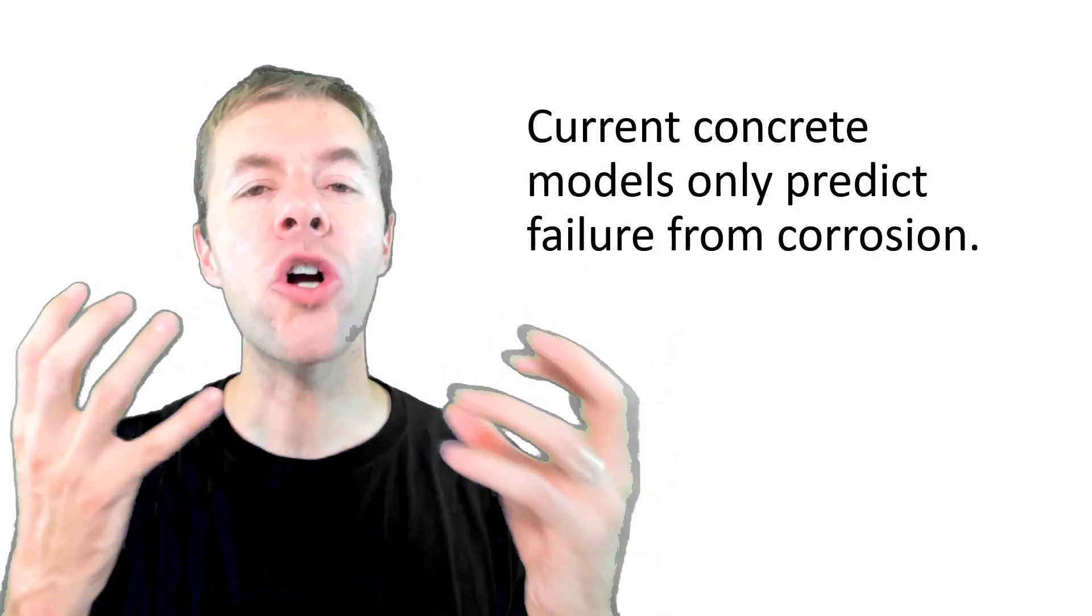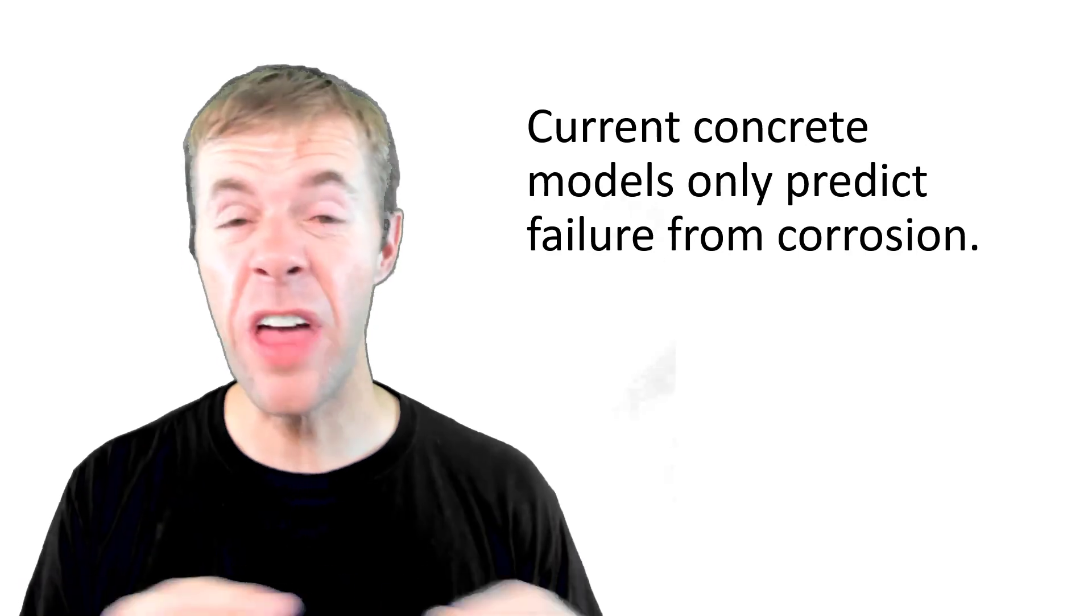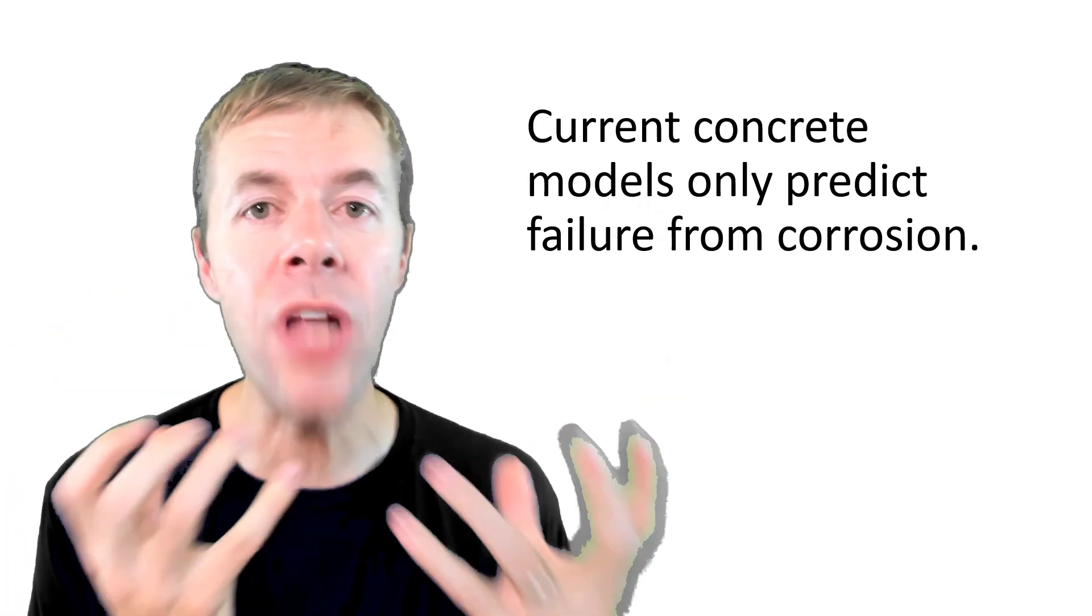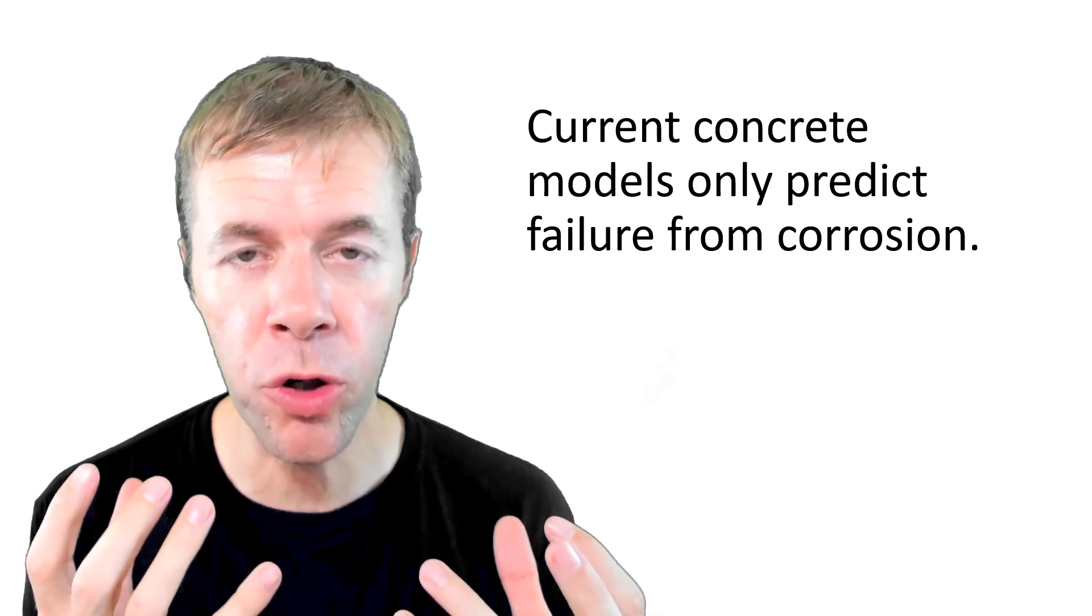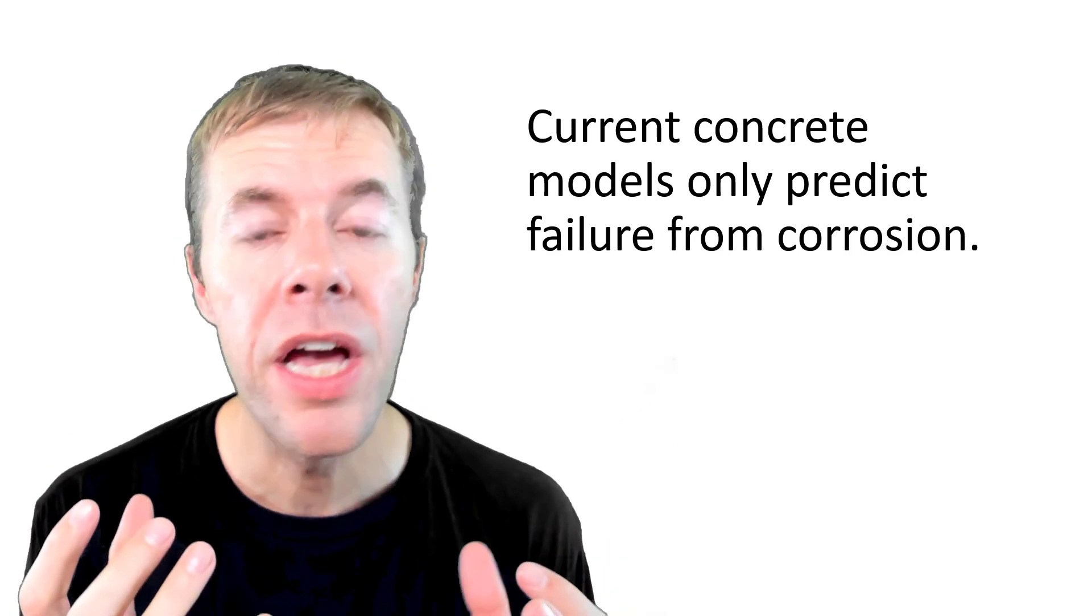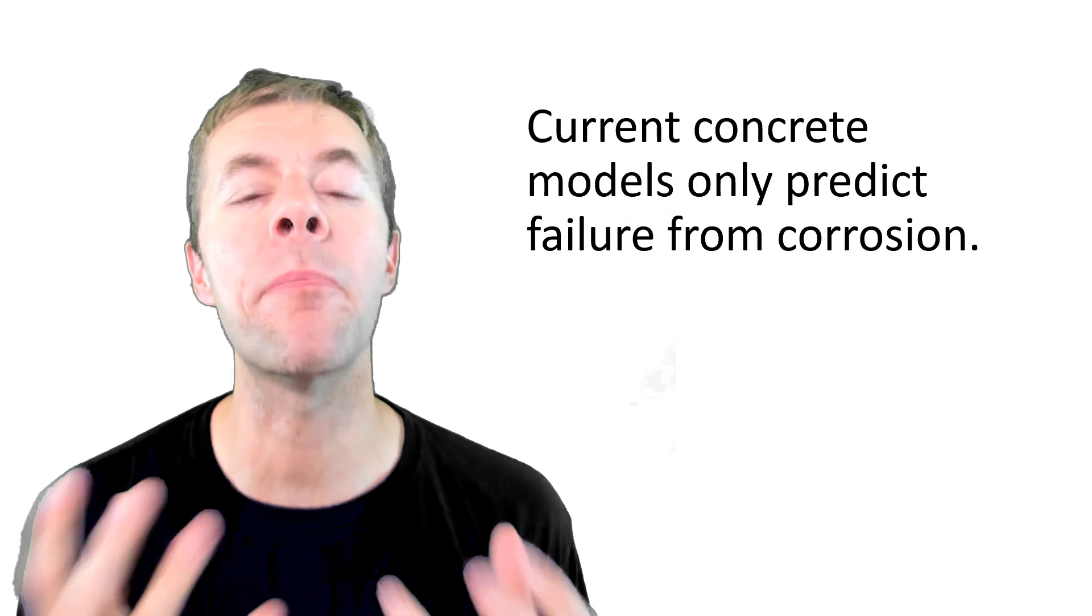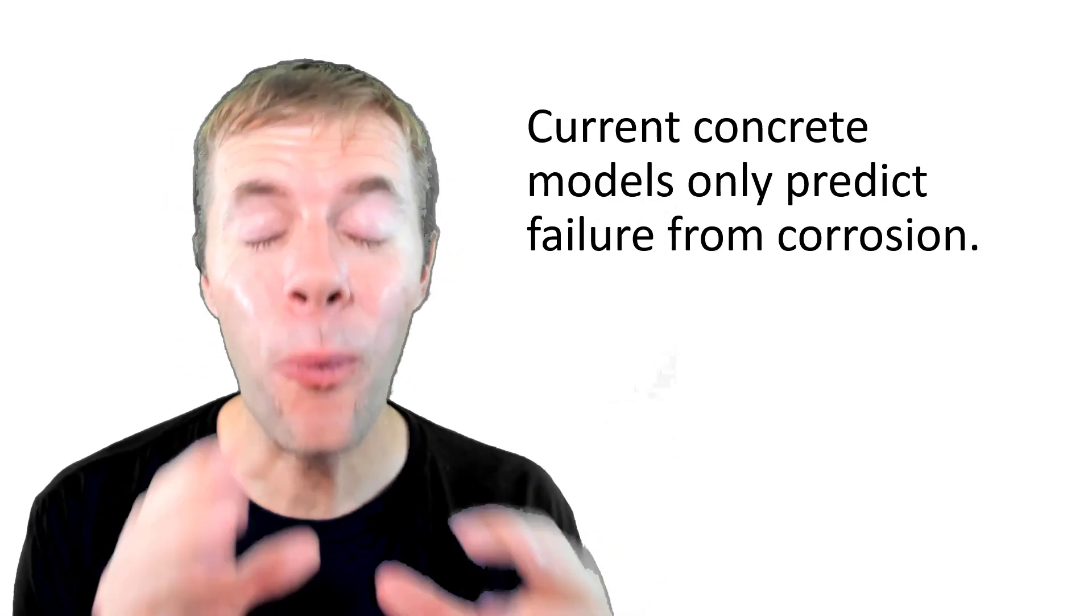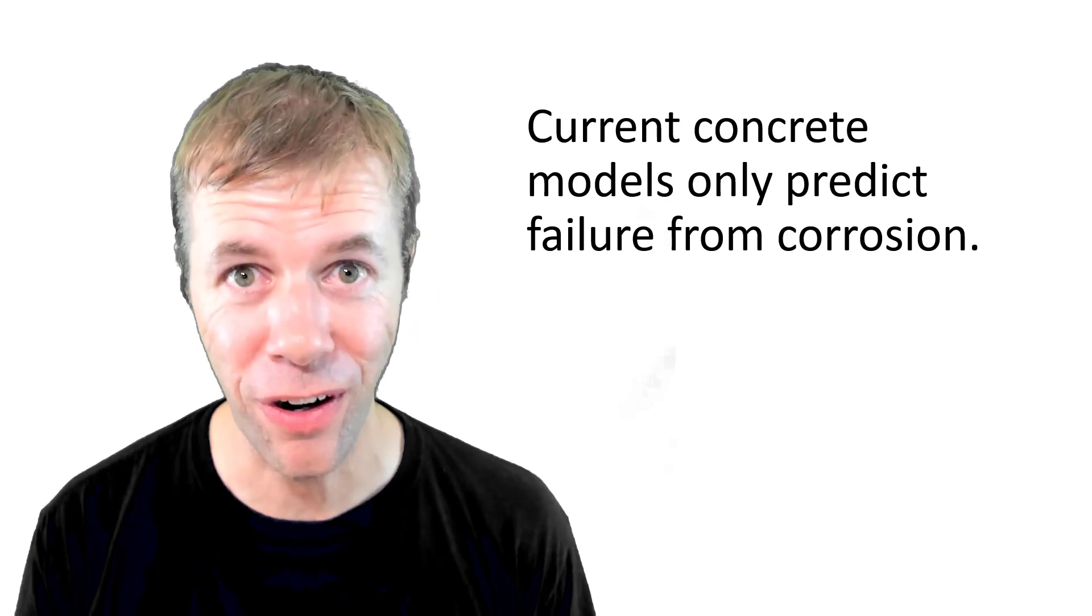But if we can find out how something's going to die, then we've got a better chance of figuring out how long it's going to live. Our current models that I'm going to talk about and that are used in practice only predict failure from corrosion. That does not mean that all structures fail from corrosion. It just means we can't predict other failure mechanisms. And some will say that we can't predict corrosion failure very well either.